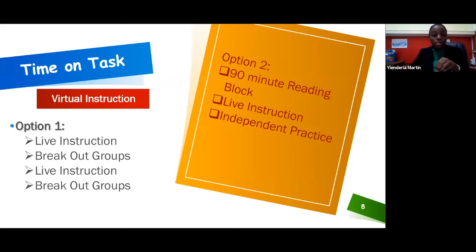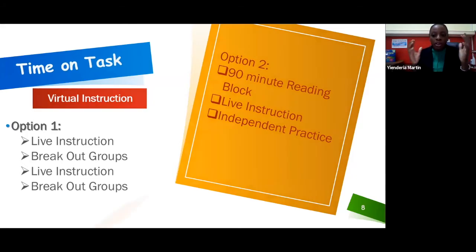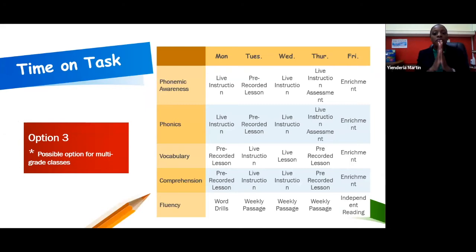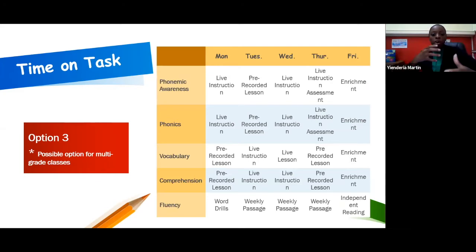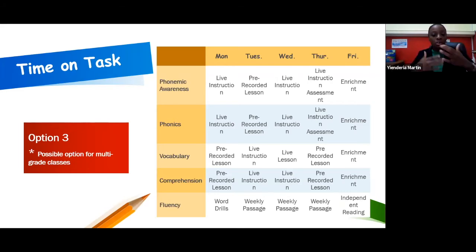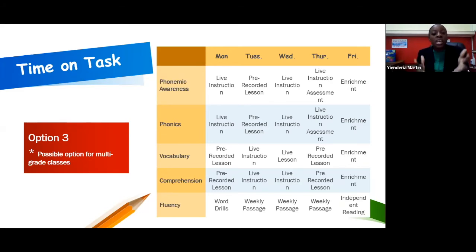Option three is where we thought about our brothers and sisters in multi-grade classrooms, or if it's one teacher at that grade level without a team to feed off of. You can have the first half of your morning as a live instruction with grade one, while grade two is actually having a pre-recorded lesson, then flip it the next day. It's almost allowing the teacher to engage with all students in a planned, structured approach. Again, these are not set in stone — these are mere options, alternatives, or suggestions. They can also be done in the face-to-face environment with a bit of tweaking. Planning is the order of the day.